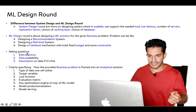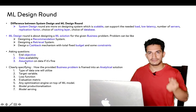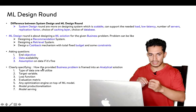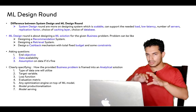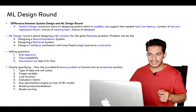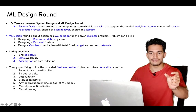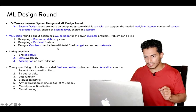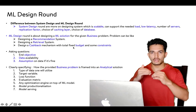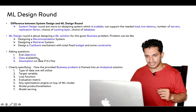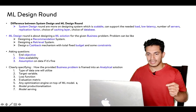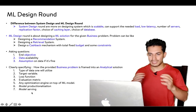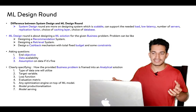My suggestions for the ML design round: start by asking questions about the end objective, what kind of data is available, and what assumptions can be made for missing data. Clearly specify how you are converting the business problem into an analytical solution. Define your target variable, loss function, and evaluation metric with justification. If there is a fixed budget constraint, you'll need an optimization layer on top of the ML model. Also address how you would productionize it and perform model serving — making the model available as an API.